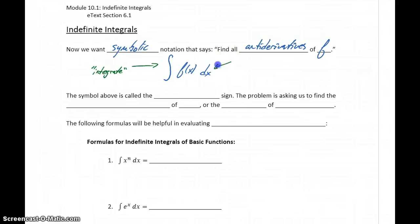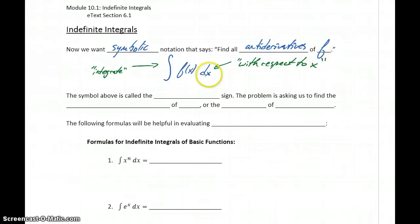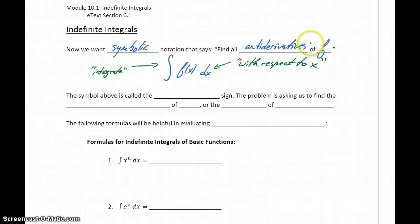This dx means essentially the same thing it did with our derivatives — it means 'with respect to x.' So basically x is our independent variable; whatever we're integrating, we're considering x to be that variable. So integrating some function f of x dx means the same thing as finding all antiderivatives of f. That elongated S symbol is referred to as the integral sign.